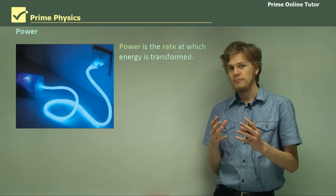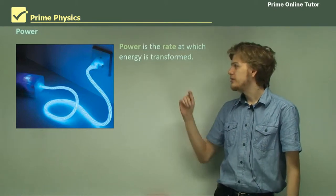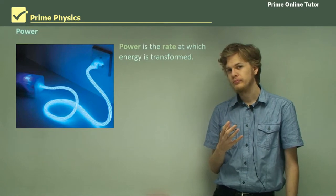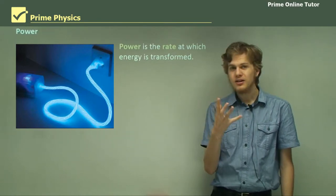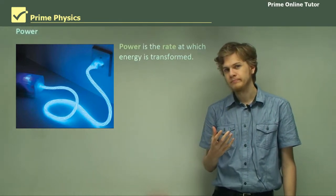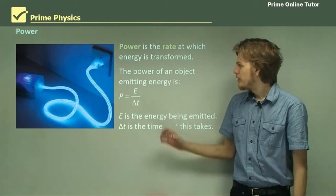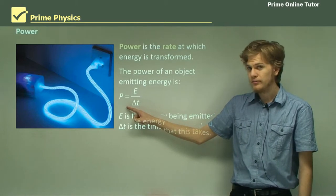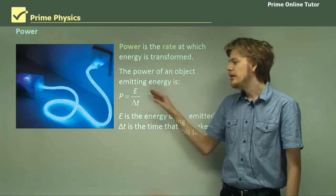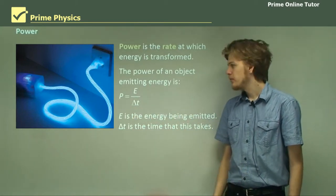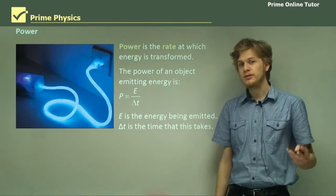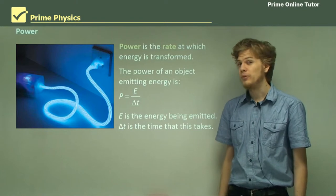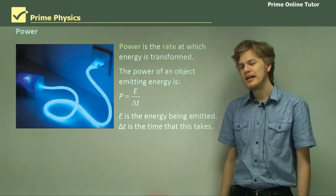Now power is the rate at which energy is transformed. So it's a rate of energy per time. So the power of any object making energy is P equals E over delta T. That is the energy over the change in time. Remember that here, P is a capital P. A lowercase p stands for momentum.